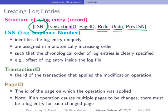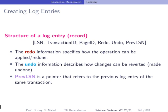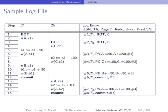The previous LSN helps you go back to see what the last operation was for the same transaction, in case you want to undo more efficiently. The redo and undo information were already mentioned. Here again we have a sample log file, and on the right hand side you see log entries with log sequence numbers one through eight, and the individual transactions T1 and T2 doing operations on data objects — pages and records. Here we read from page PA into a local variable a1, which we decrease and write back.